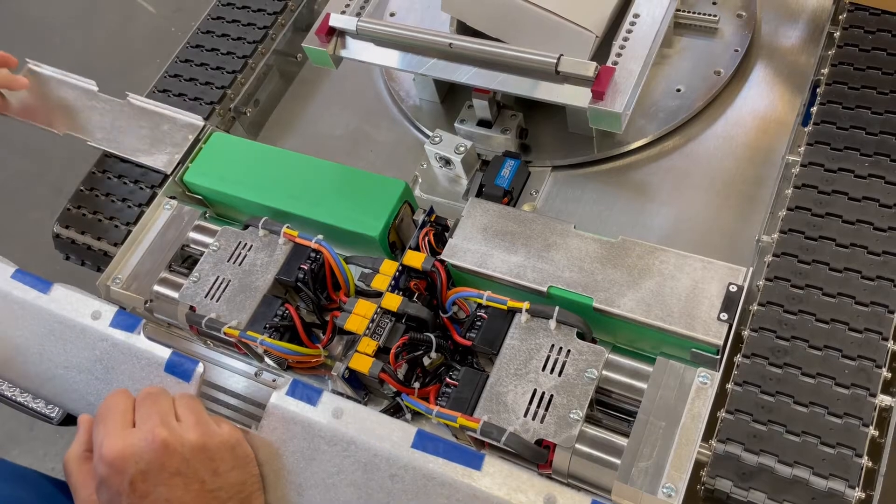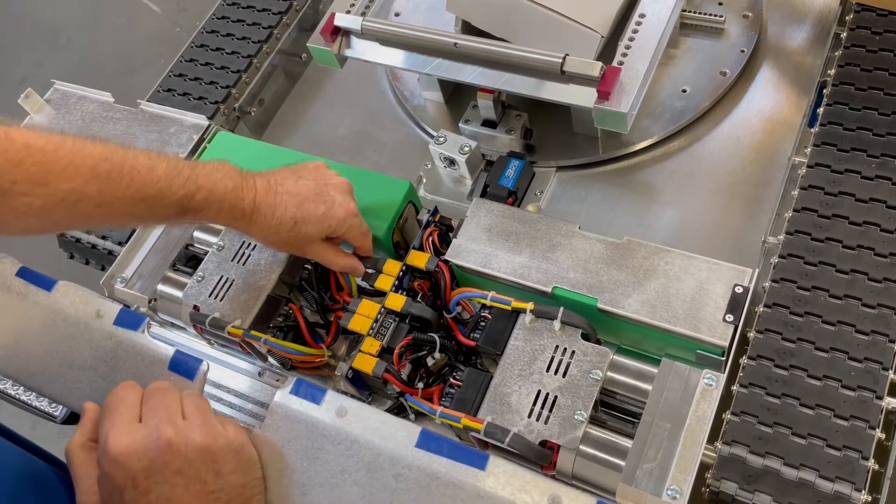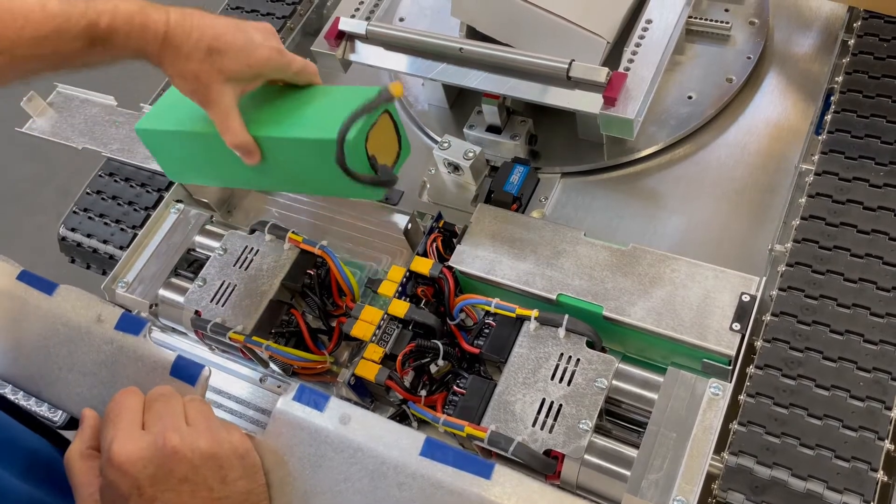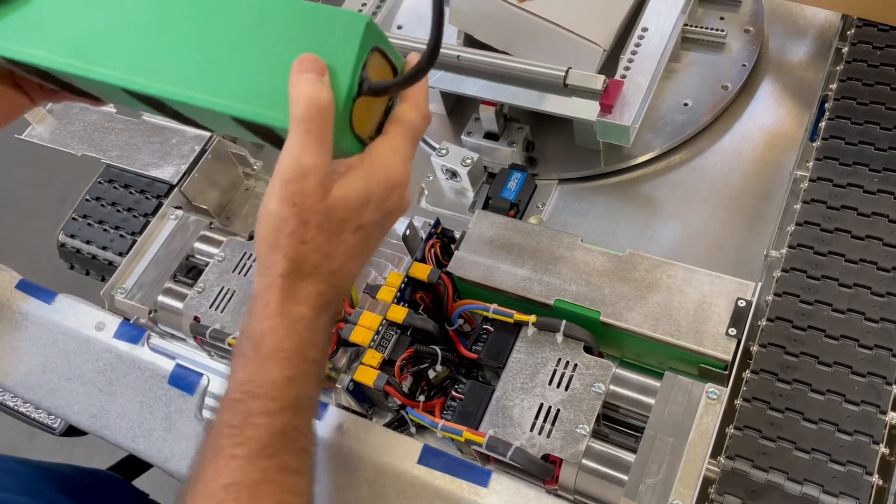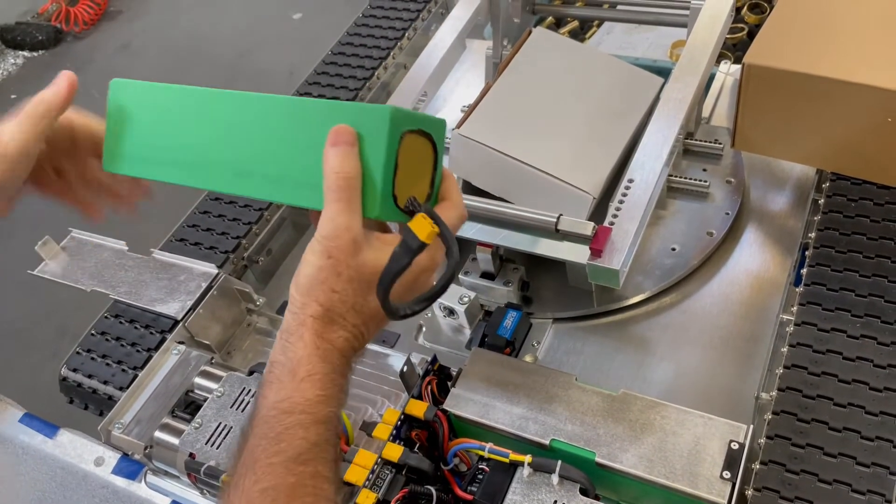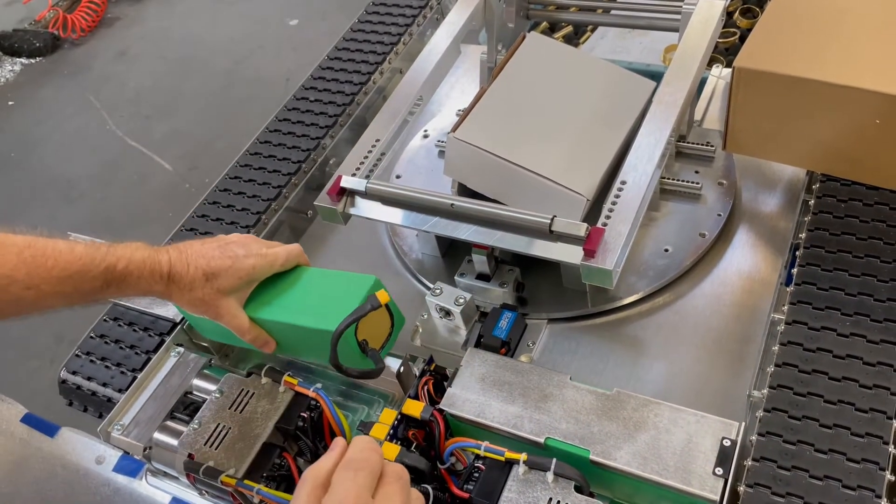I'm going to unplug this battery on the left side and pull it out. You can see on the bottom there's velcro.